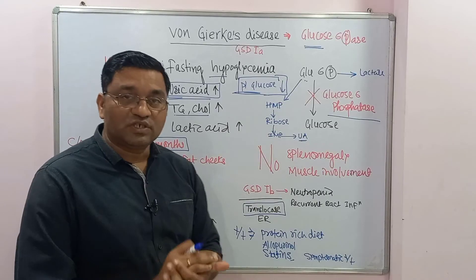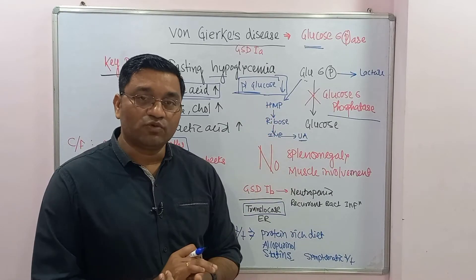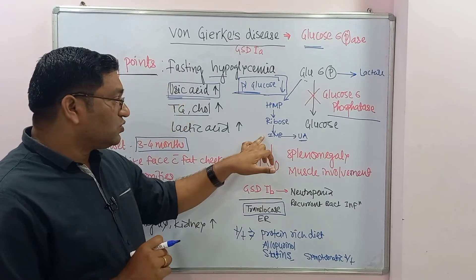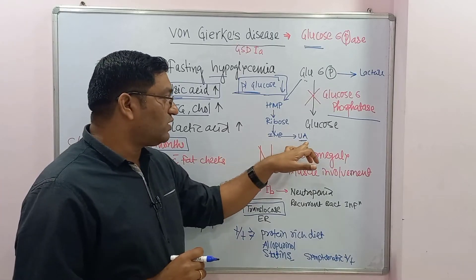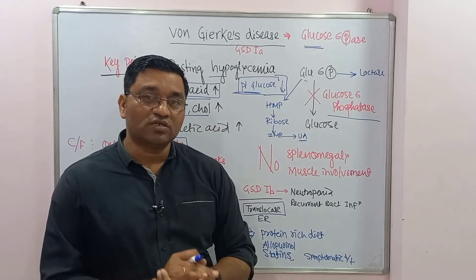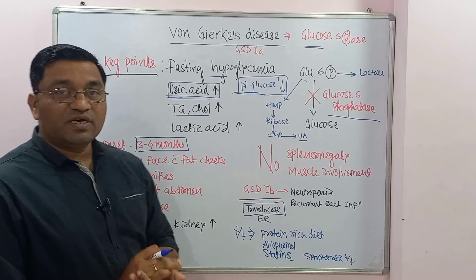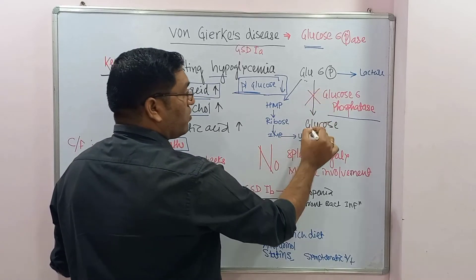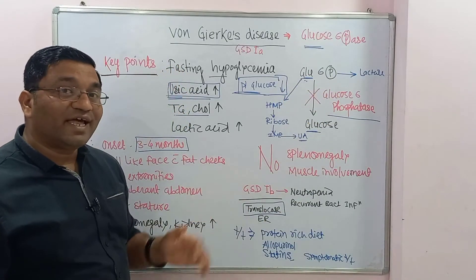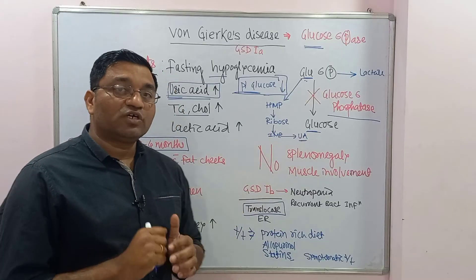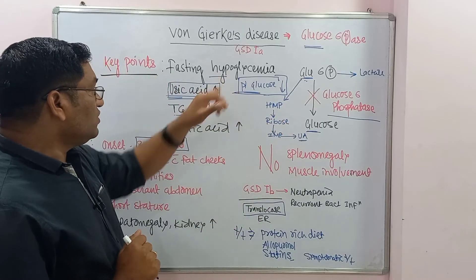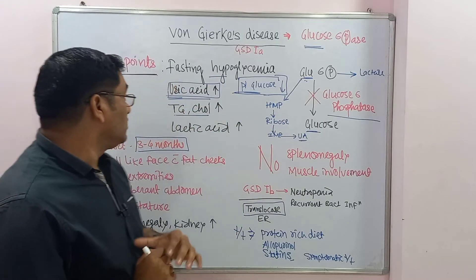Due to glucose-6-phosphatase deficiency, glucose-6-phosphate accumulates and is diverted through the HMP shunt (hexose monophosphate shunt) for the production of ribose. Ribose is a precursor molecule for purine synthesis, and these purines on degradation produce uric acid — causing hyperuricemia. Fasting hypoglycemia occurs because glucose is not formed, and the accumulated glucose-6-phosphate inhibits glycogen phosphorylase, which is important for glycogenolysis, the degradation of glycogen into glucose.